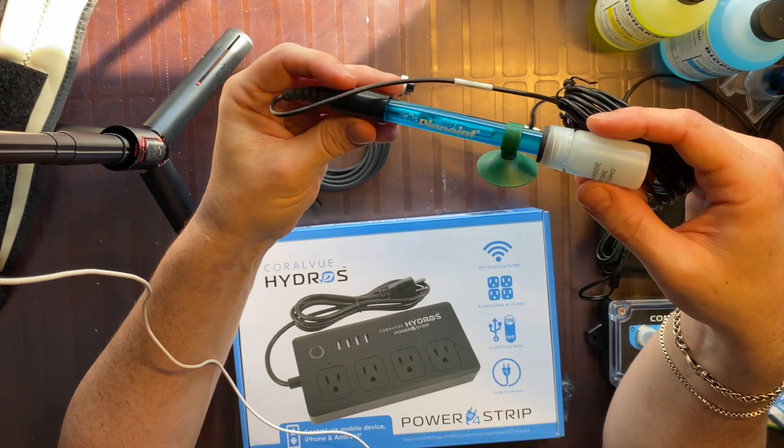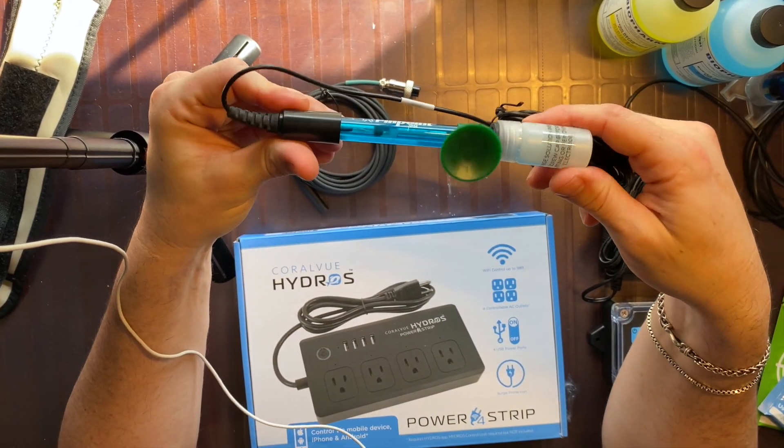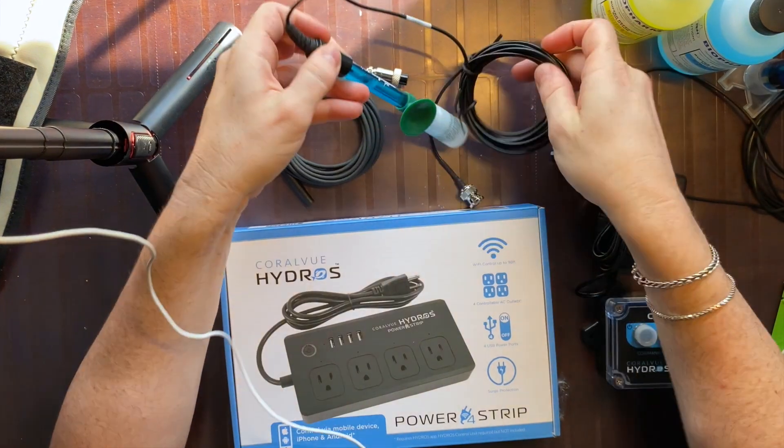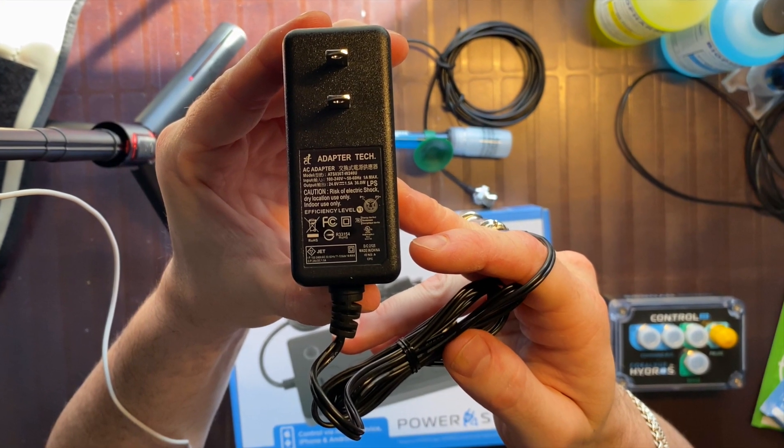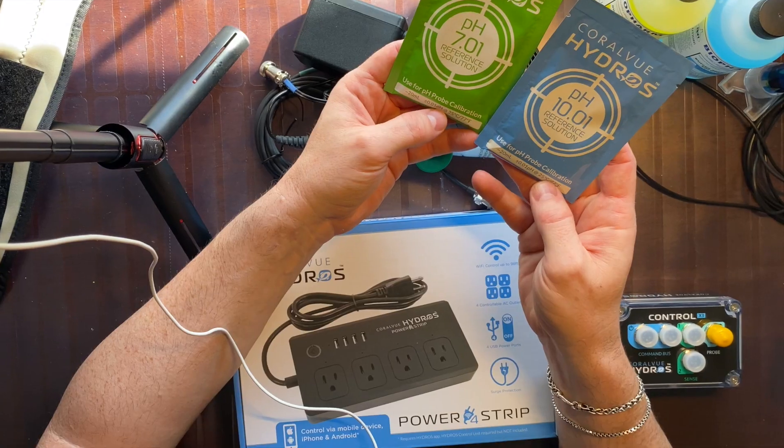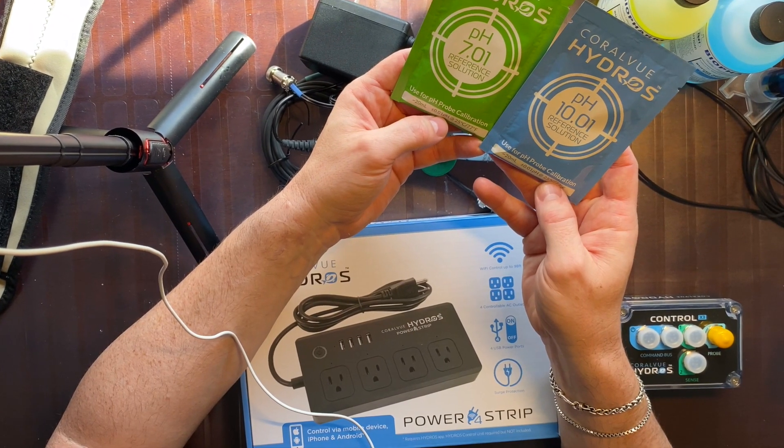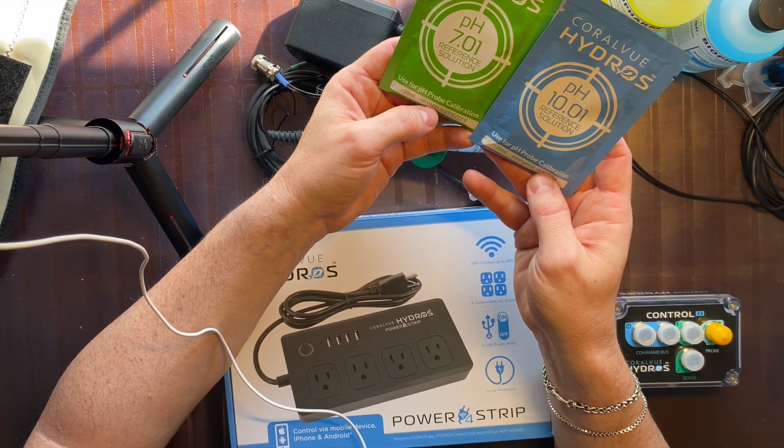We have the pH probe here by Endpoint. Power cord. And two packets of calibration fluid, seven and ten.